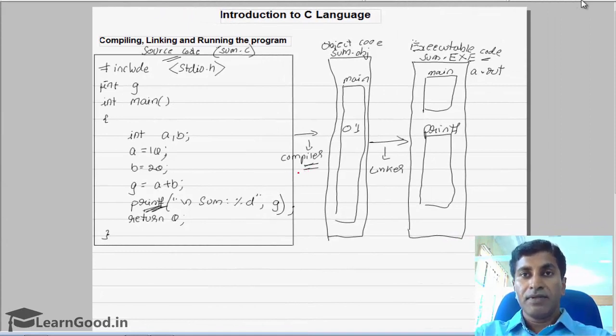During compiling, when the compiler converts the source code to an object code, whatever errors you get—for example, you might have not given a semicolon—those errors are listed by the compiler and such errors are called syntax errors or compiler errors.